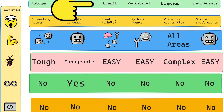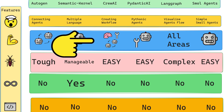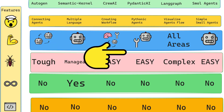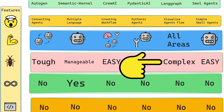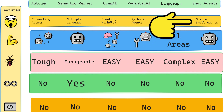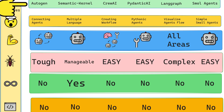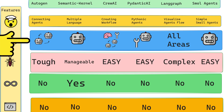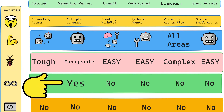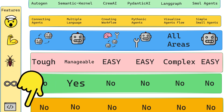CrewAI and Pydantic AI are strong in agents and tools and easy to debug, while LangGraph is an all-rounder with a complex debugging process. SmolAgents is the simplest among them all, lacking memory features. Autogen and Semantic Kernel, which are popular, are in reality tough when it comes to debugging, and Semantic Kernel provides multi-language support.